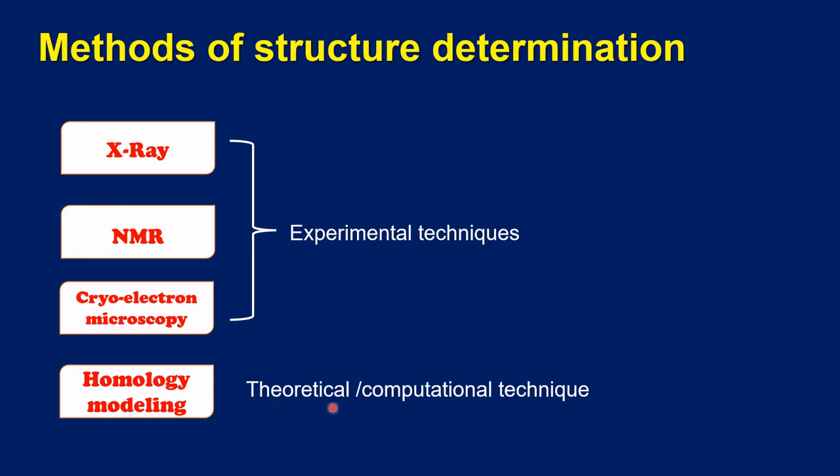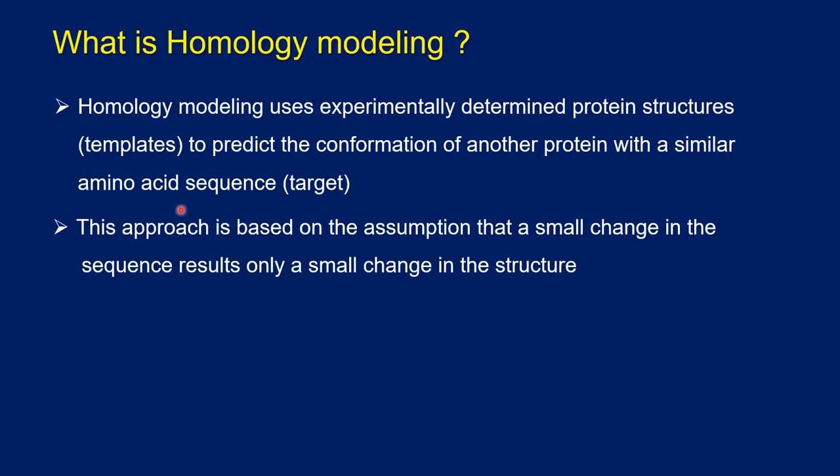In homology modeling, what are the different steps we will be discussing now. Homology modeling uses experimentally determined protein structures to predict the conformation of another protein which is having a similar amino acid sequence.